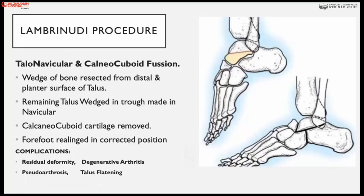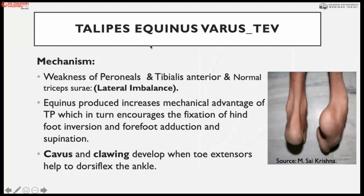In the Lambrinudi procedure, a talonavicular and calcaneocuboid fusion is done by resecting the inferior part of the talus; the dorsal remaining portion of the talus is denuded of soft tissue and a trough is made in the navicular bone. The foot is re-aligned in neutral position by inserting the talus into the navicular trough — arthrodesis of the talonavicular and calcaneocuboid joints. For talipes equinovarus, muscle transfers are combined with the Lambrinudi procedure along with lateral wedge resection.